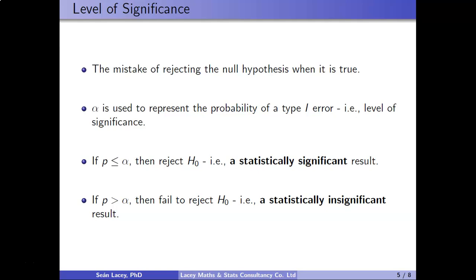If your p-value is greater than your level of significance, you fail to reject the null hypothesis, giving a statistically insignificant result. I wouldn't say a statistically insignificant result means your result is unreliable — that would imply you made a mistake in data collection. More accurately, a statistically insignificant result means that the effect you've observed occurred by chance. These two rules never change: p-value ≤ alpha means reject the null hypothesis (statistically significant, reliable result); p-value > alpha means fail to reject (statistically insignificant, result occurred by chance).